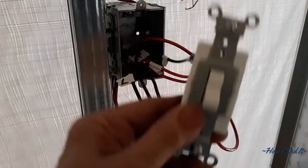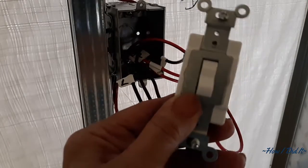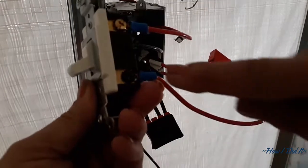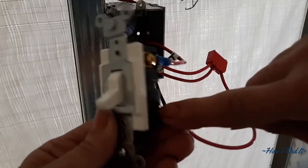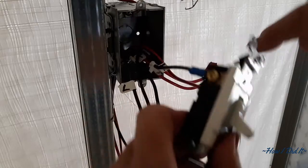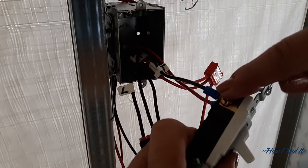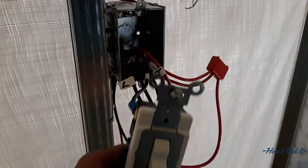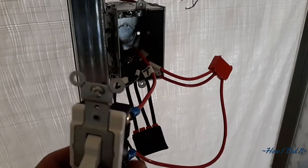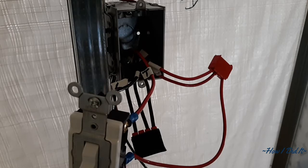When you're wiring a three-way switch, the first switch gets on the brown screw, the power, and on the two brass screws, the travelers. The travelers are going to go out to the other light switch. Now, we'll go look at the other light switch.